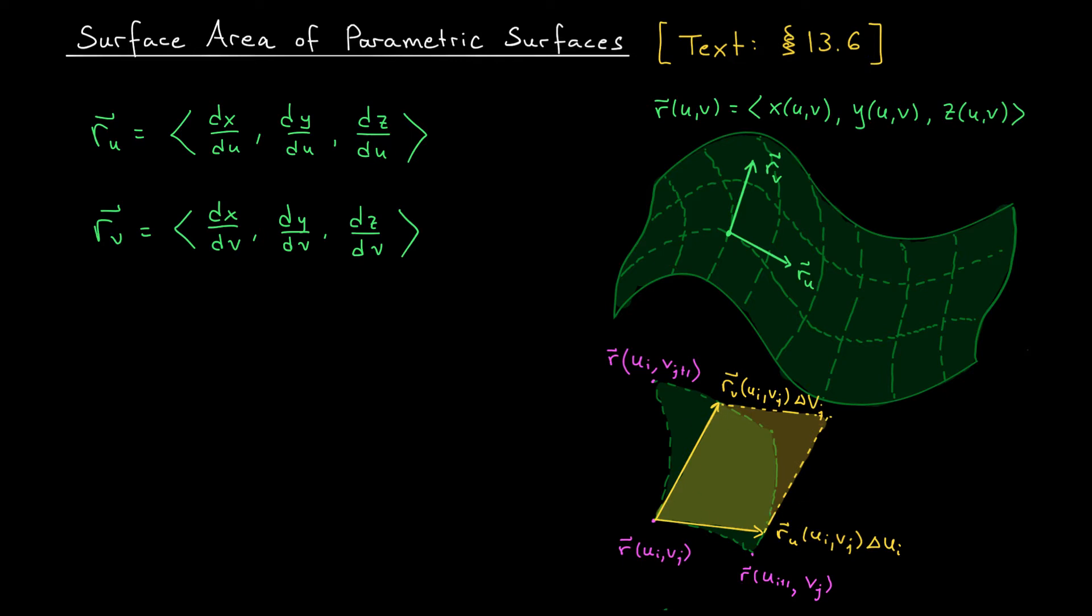So how do we find the area of this parallelogram? Well, if you think back to the very beginning of the course, when I first told you about cross products, I mentioned that if you take the norm of the cross product of two vectors, you exactly get the area of the parallelogram that they form. We haven't used that fact up until now, but here is where it's needed. So the area of our patch is approximately the area of this parallelogram, which is the cross product of ru delta ui with rv delta vj. Now, since delta ui and delta vj are constants, they can be pulled out of the norm and out of the cross product, giving us an area of the norm of ru cross rv times delta ui delta vj. That's an approximation of the area of one patch.